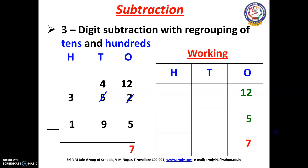Now we are going to do the 10's place. Here we have 4 and 9. We cannot subtract 9 from 4. So we have to borrow from the 100's place. Now this 3 will change into 2 and 4 will change into 14.